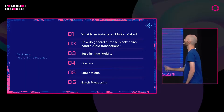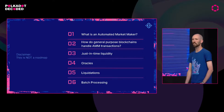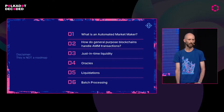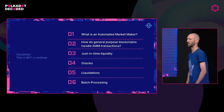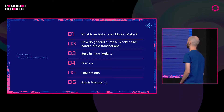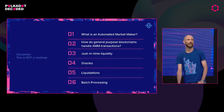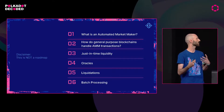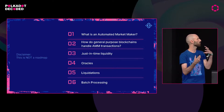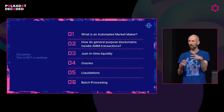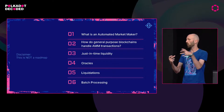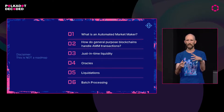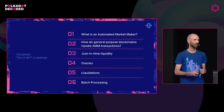As we go through how to build a block for an automated market maker, we're going to touch on some things that you've probably heard about if you've been paying any attention to DeFi — like just-in-time liquidity, oracles, liquidations. But we're going to do this all in the context of how do we build a block, or how do we appropriately constrain the building of blocks for automated market makers?